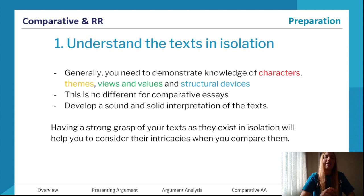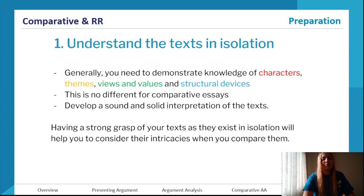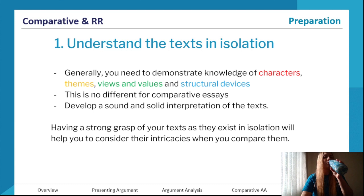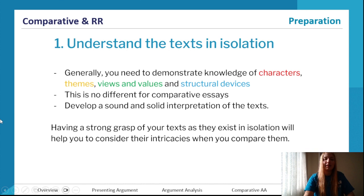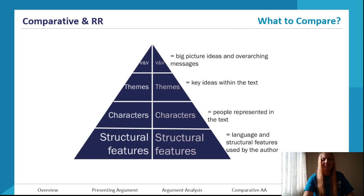To prepare well, first you need to understand the texts in isolation. Read the books and other texts and have a good understanding of them — be able to interpret them and have strong ideas. Have great knowledge of characters, themes, views and values, and structural devices. Use your notes, annotate your book, accumulate quotes, do mini analysis activities, and group everything by themes. Without a strong understanding, you will not be able to make strong comparative links.